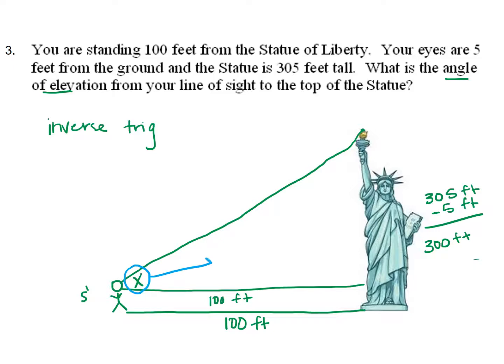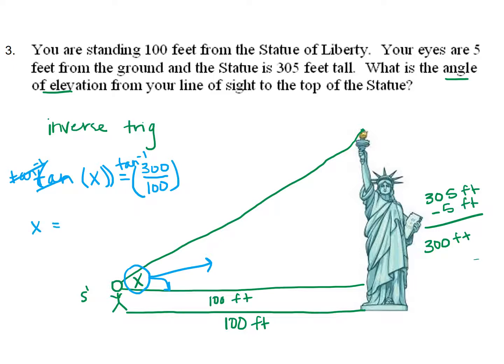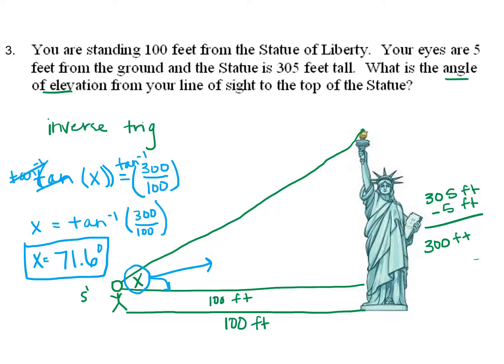If this is my reference angle, I know the opposite side and the adjacent side — 300 and 100 respectively — so I use tangent. tan(x) = 300 over 100. To get x out of the tangent, I apply the inverse operation: x = tan⁻¹(300/100). I type tan inverse of 300 over 100 into my calculator and get 71.6 degrees. So the angle of elevation when you're 100 feet from the Statue of Liberty, viewed from five feet off the ground, is 71.6 degrees.